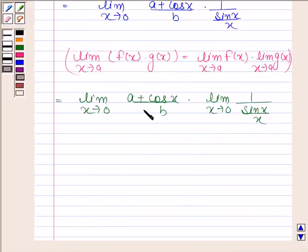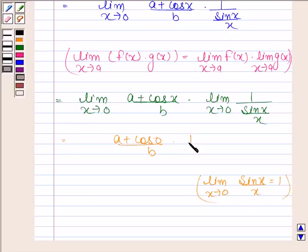Now this is equal to a plus cos 0 by b. We know that limit x tends to 0 sin x by x is equal to 1, so this means this is also equal to 1. Cos 0 is equal to 1.